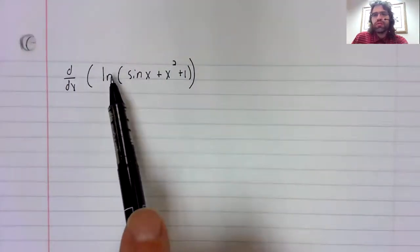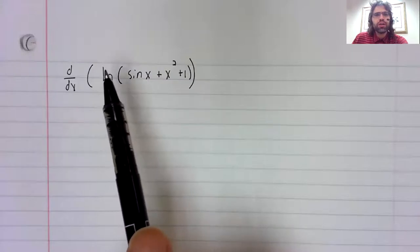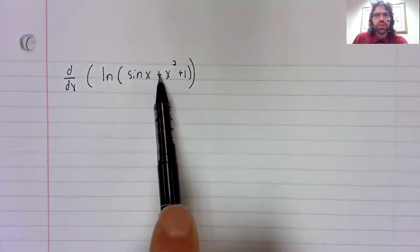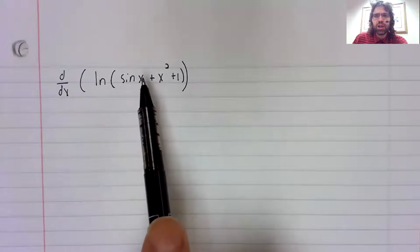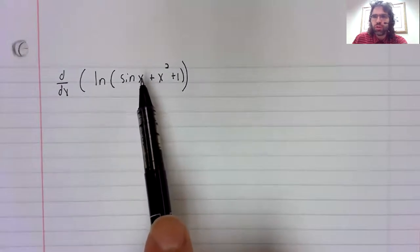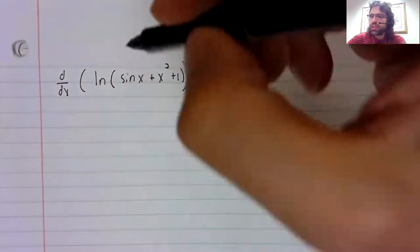So if you've got the natural logarithm of a function, that's always a composition. So it's always the chain rule.